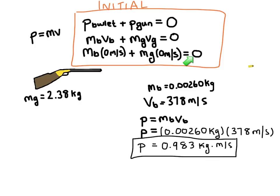This is the total of the bullet and the gun. So that means if the bullet is traveling at positive, you can see that this is positive momentum here, 0.983, that means the momentum of the gun has to be negative 0.983. Because if we add them together, they're going to equal zero, and so that would obey the law of conservation of momentum.